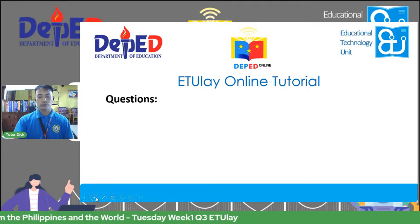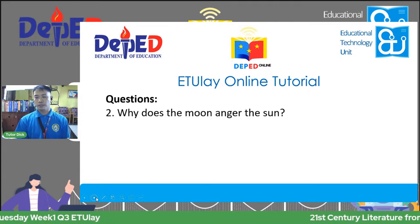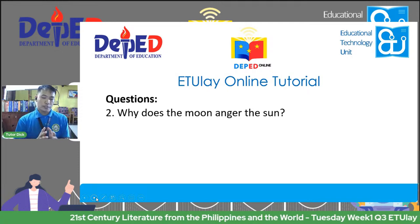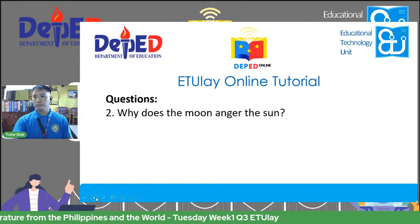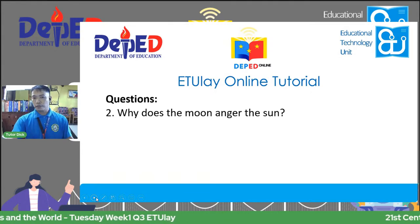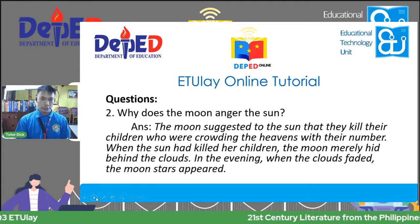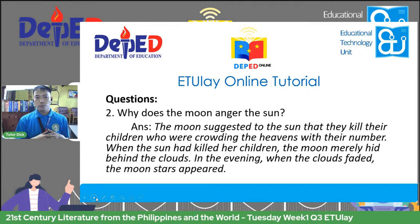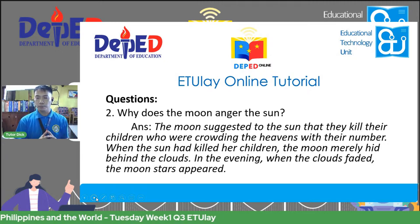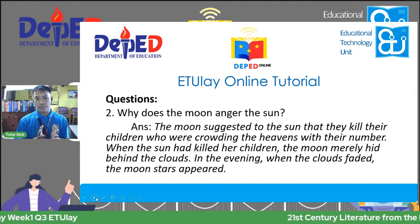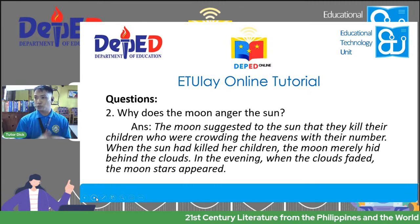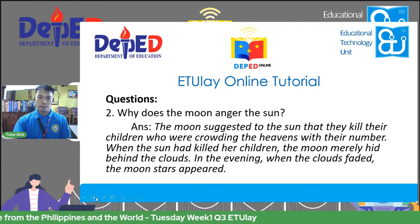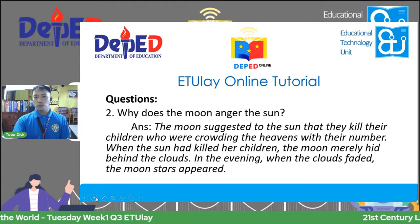Question number two: Why does the moon anger the sun? Based from the story, bakit nagalit si sun kay moon? Again, we're going to answer this using the text itself. The moon suggested to the sun that they kill their children who were crowding the heavens with their number. When the sun had killed her children, the moon merely hid behind the cloud. In the evening when the clouds faded, the moon stars appeared. She hid her children — that's the reason why the moon angered the sun.